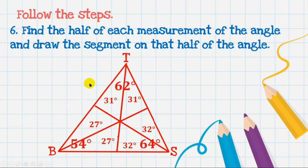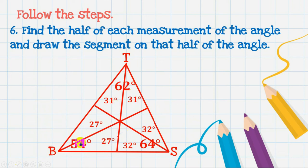This is now the different angle bisectors of triangle BTS. Using the protractor and ruler, we are able to form the angle bisectors of this triangle. So 54 was divided into 27 and 27, 62 was divided into 31 and 31, and 64 was divided into 32 and 32.